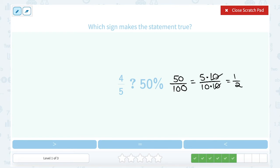5 over 10 is 1 half. Right, 5 goes into 5 once, and 5 goes into 10 twice. So 50, which also makes sense, 50 is half of 100. So you can do the in-between step, or if you notice that right away, it's just up to how you see it. So which is bigger, 4 fifths or 1 half?